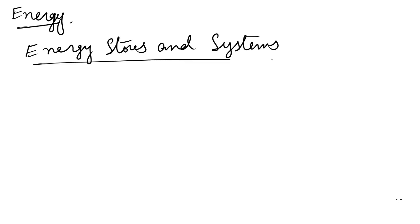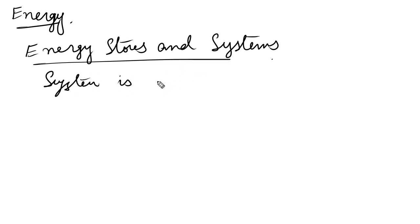Today we are going to start our first topic of AQA GCSE Physics combined science, and this topic is energy. This topic will start off with energy stores and systems, so let's discuss what a system is. A system can be an object or a group of objects.